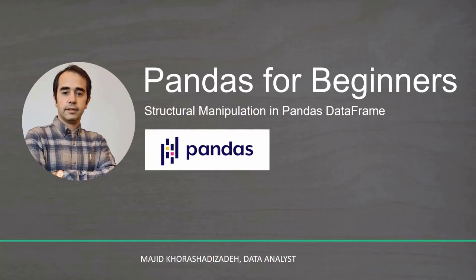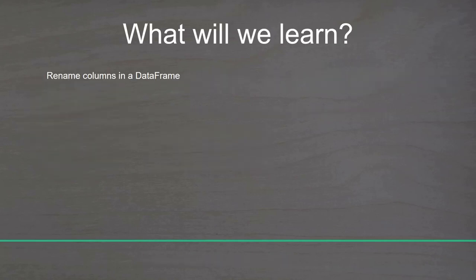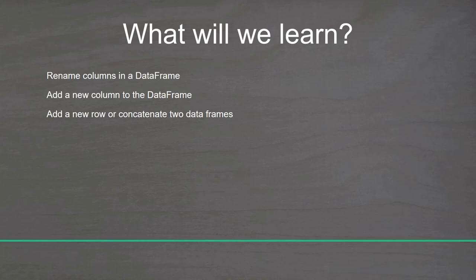In the previous video, we started the preprocessing phase by learning to handle missing data and remove duplicate rows. Sometimes before the main analysis, we need to modify our DataFrame structure. This involves removing columns or rows, changing the format of existing data, or creating derived features from other columns. Pandas provides a powerful set of tools to modify our DataFrame structure. In this video, we will learn how to rename columns, add a new column, concatenate two DataFrames, and remove columns or rows using the drop method.